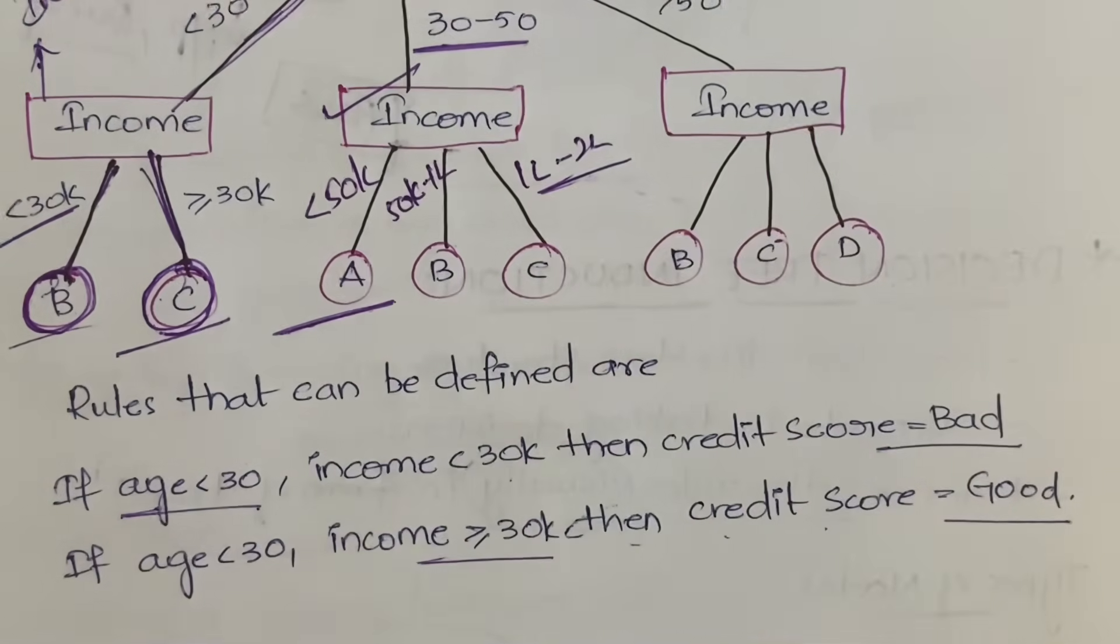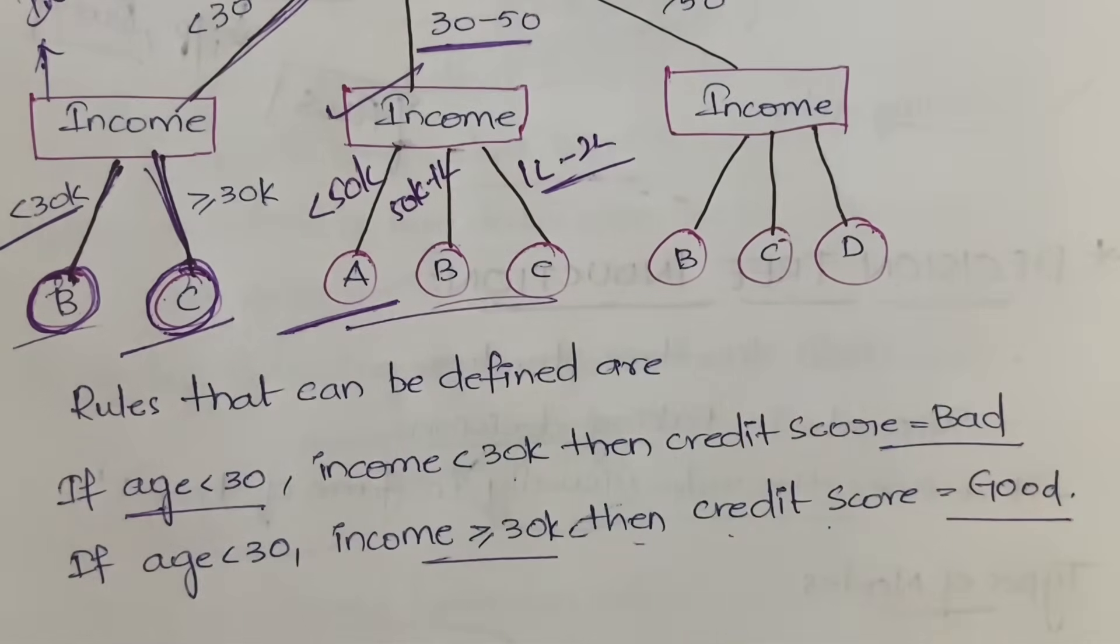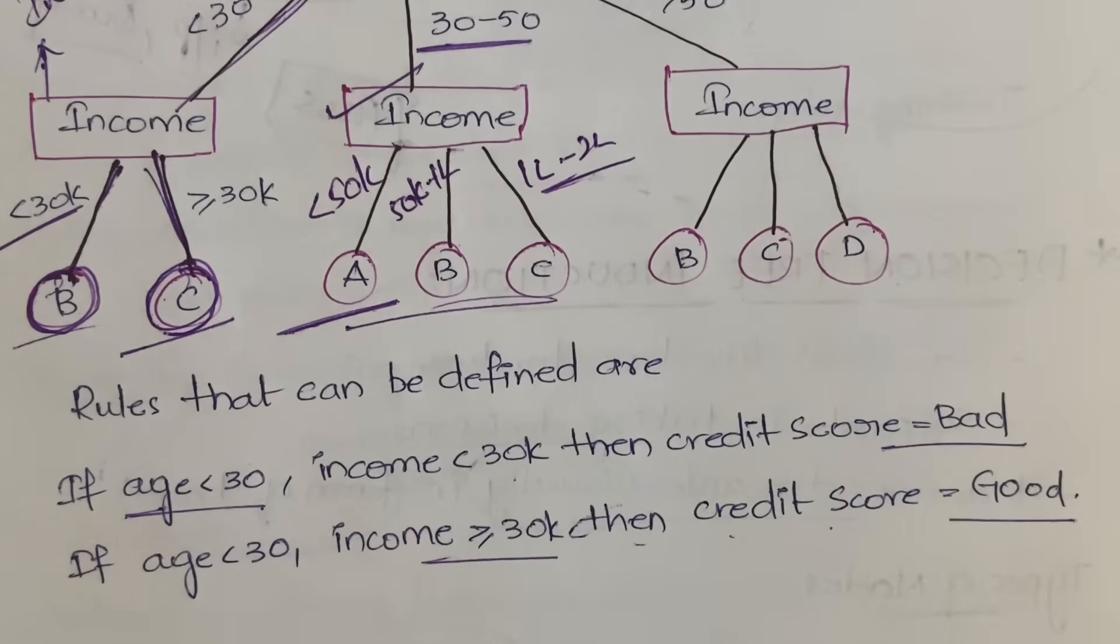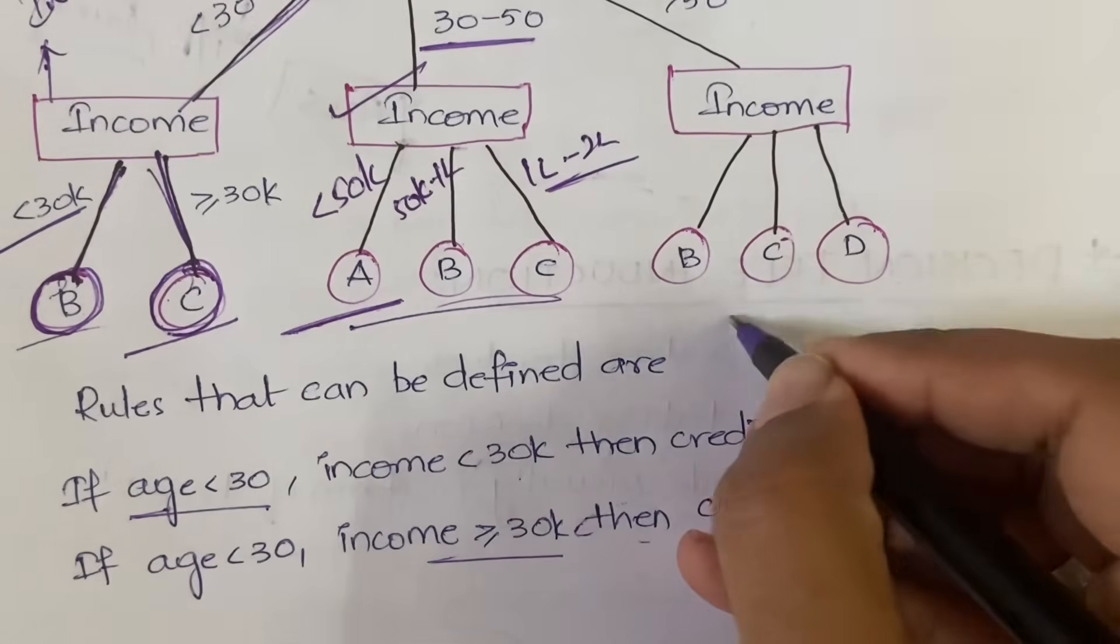Based on the income that the person has said you will be categorizing into the credit score. So in this way decision tree will help you in making quick decisions and also in classification of the data. So now you have classified the people into different credit scores A, B, C, D. This is about the decision tree.